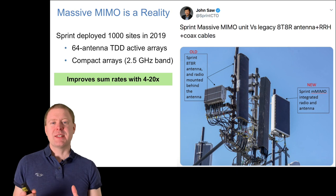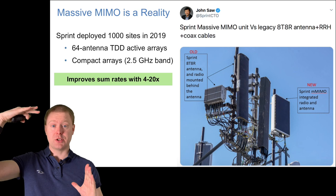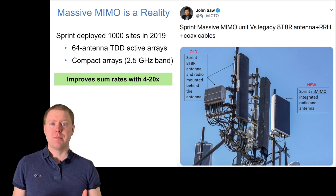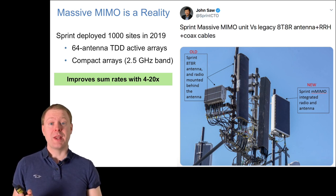However, even if it says massive in the name, it's not very large. The panels they deployed contain 64 antennas in a 2.5 gigahertz band, and it improved their rates by 4 to 20 times.